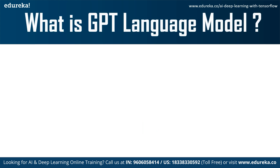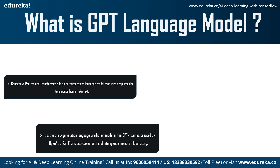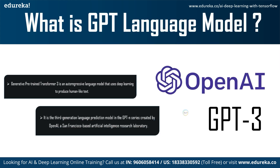So what is the GPT-3 model? GPT-3, which stands for Generative Pre-trained Transformer 3, is a language model created by OpenAI, an artificial intelligence research laboratory in San Francisco. This 175 billion parameter deep learning model is capable of producing human-like text and was trained on a large text dataset with hundreds of billions of words.